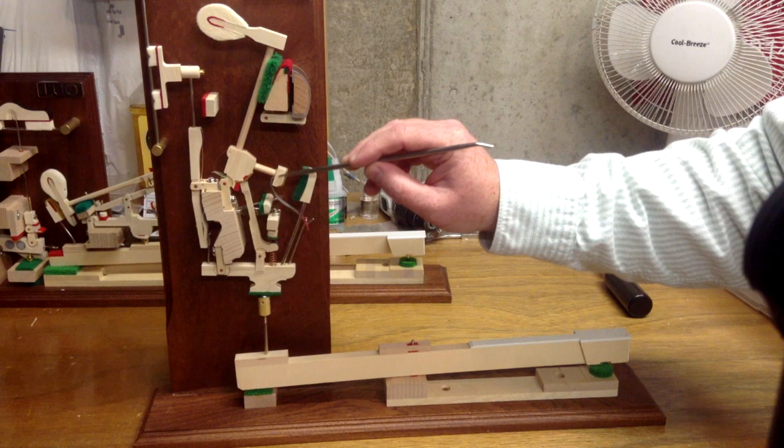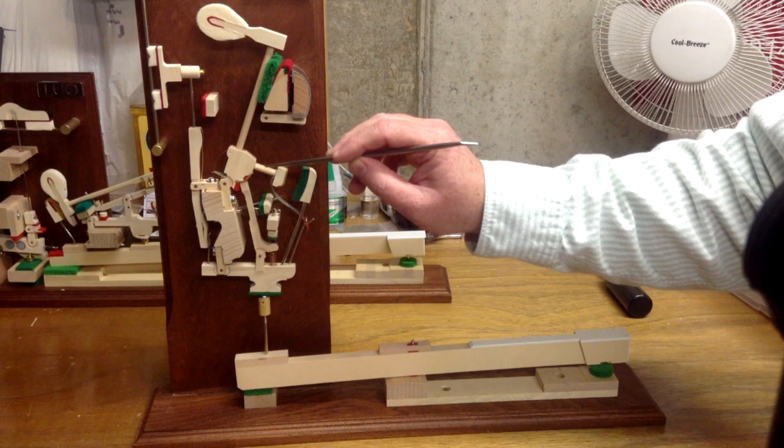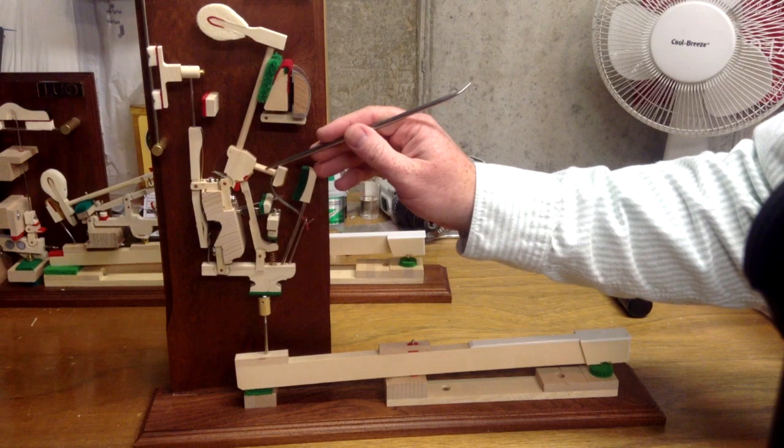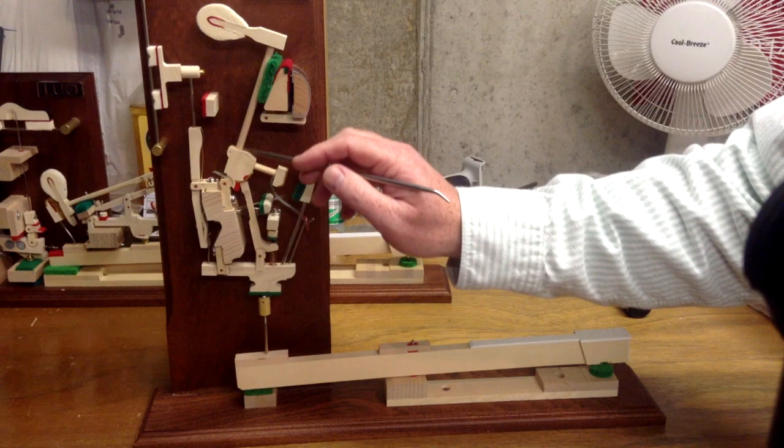This is the catcher, and then the catcher shank. That's what the bridle strap gets attached to. If you get the clip-on bridle straps, that just clips to this catcher shank right here. Then of course, this is the hammer shank right here. This rod here that goes from the hammer butt. Of course, this is the hammer. That's the piano hammer.